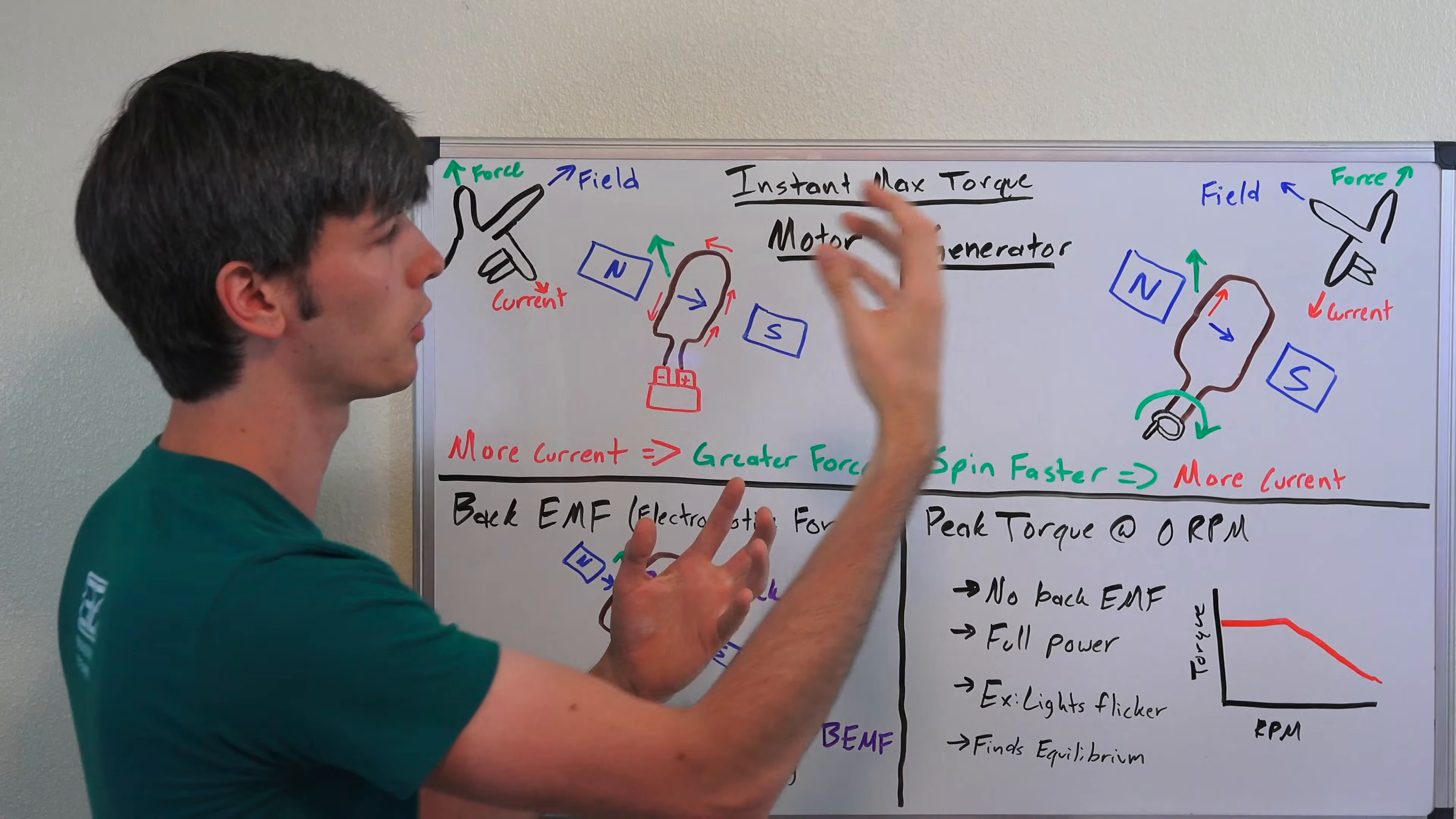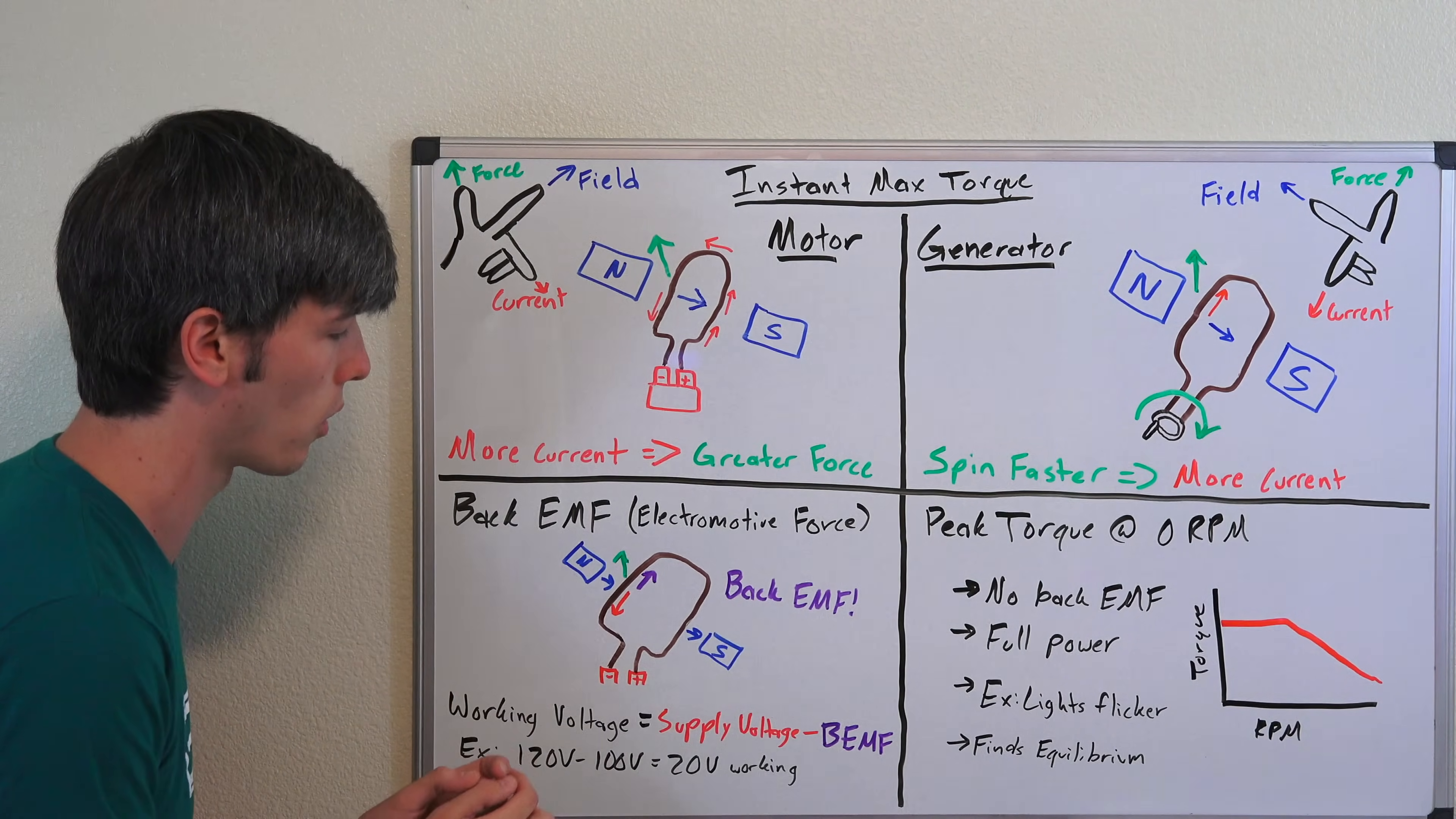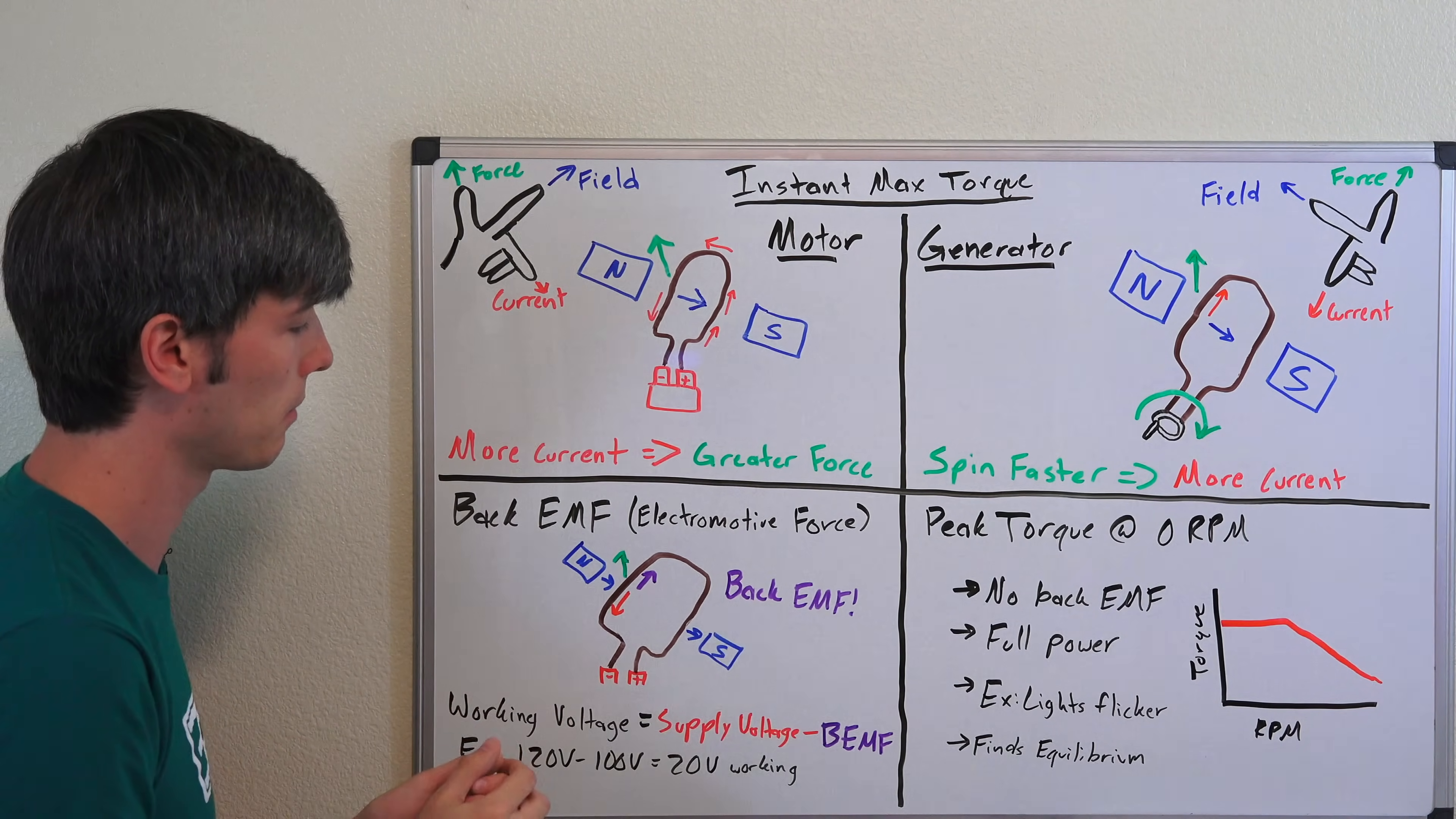Or electromotive force. So the two occur simultaneously, and the faster you spin up this motor the more back EMF you're going to have. You've got your current here from north to south, just like this, it's the exact same scenario.